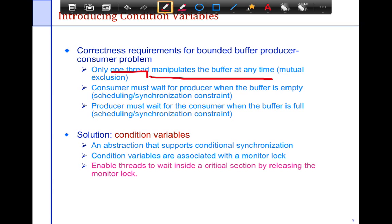Consumer must wait for the producer when the buffer is empty. So if the buffer is empty, then the consumer should not run, should not interfere with the producer until the producer runs. Similarly, producer must wait for the consumer when the buffer is full. Again, a scheduling constraint that says that if the buffer is full, then the producer must not run and should not interfere with the system until the consumer runs.